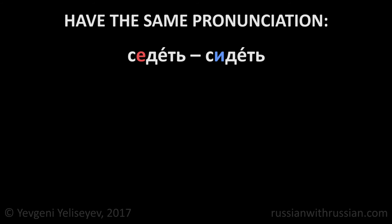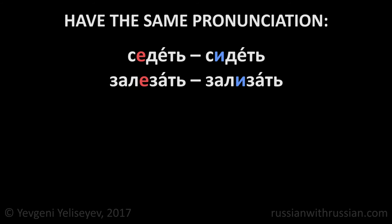As a result of unstressed vowels mutations, some roots or root forms have the same pronunciation in spite of being written differently. For example: СИДЕТЬ and СИДЕТЬ — there is no difference. ЗАЛЕЗАТЬ and ЗАЛЕЗАТЬ — no difference either.